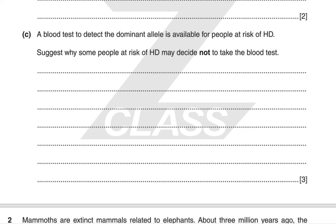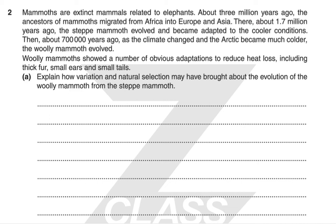Mammoths are extinct mammals related to elephants. About 3 million years ago, the ancestors of mammoths migrated from Africa into Europe and Asia. About 1.7 million years ago, the steppe mammoth evolved and became adapted to the cooler conditions. Then about 700,000 years ago, as the climate changed and the Arctic became much colder, the woolly mammoth evolved. Woolly mammoths showed a number of obvious adaptations to reduce heat loss, including thick fur, small ears and small tails. Explain how variation and natural selection may have brought about the evolution of the woolly mammoth from the steppe mammoth.